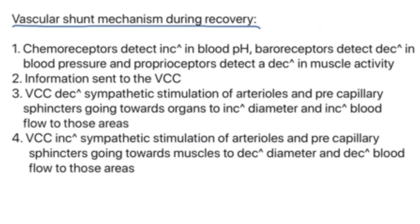During recovery, it is literally the opposite. The chemoreceptors detect an increase in blood pH back towards neutral, around 7. The baroreceptors detect the decrease in blood pressure, and the proprioceptors detect the decrease in muscle activity. That information is once again sent to the vasomotor control centre in the brain. The vasomotor control centre then decreases sympathetic stimulation of the arterioles and precapillary sphincters going towards the organs, to increase their diameter and increase blood flow to those areas — because your body needs to get back into homeostasis.